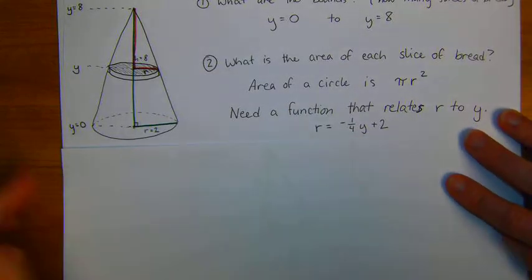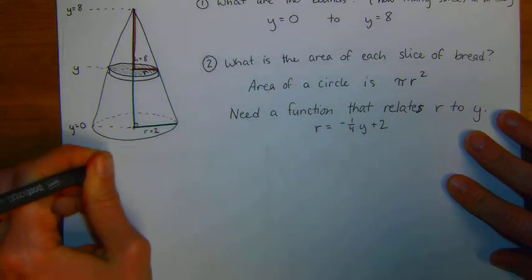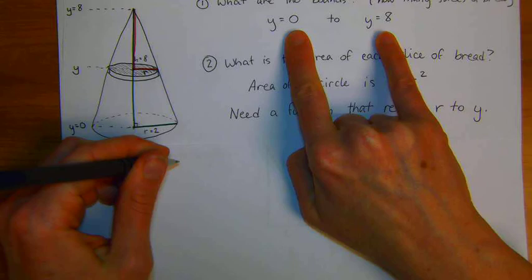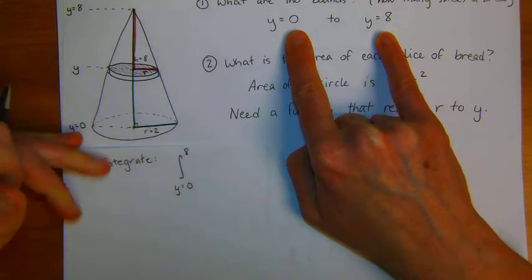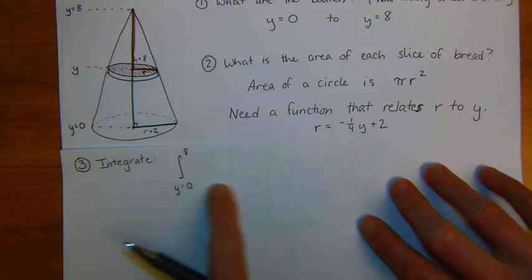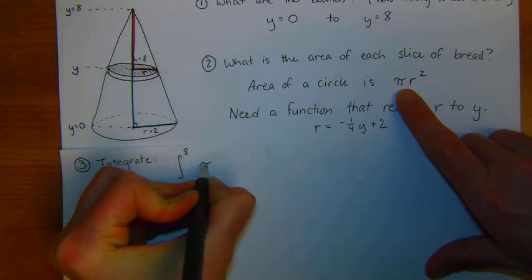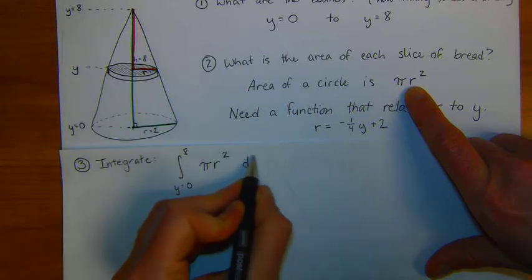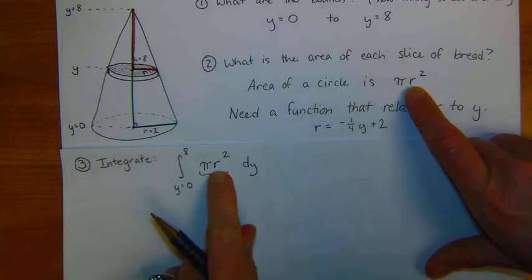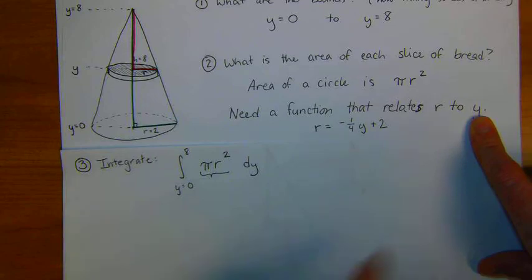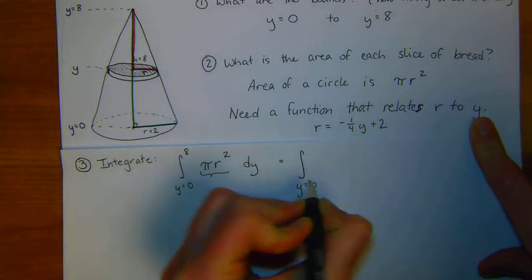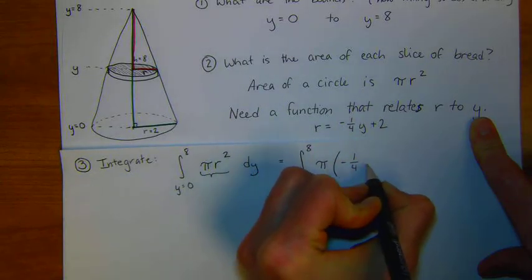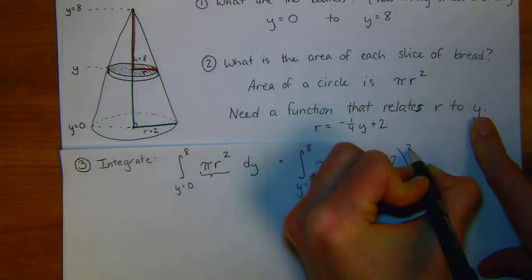That's the hard part. Thankfully, we did all the hard work, and now the rest of it is easy. My third step is to integrate. We're integrating from y equals 0 to 8. I want to add up my slices of bread as they go from 0 to 8. And I need to know what is the volume of each slice of bread. The volume is pi r squared dy. But we can't integrate this with an r in here. We needed a function that relates r to y, and we found that function.